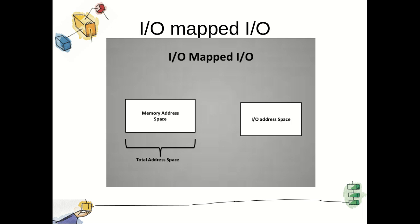Next is IO mapped IO. In case of IO mapped IO, there are separate control lines for memory and output devices. A memory reference instruction does not affect an input/output device. There are separate address spaces for memory and IO devices, and memory locations and IO devices can have the same address.